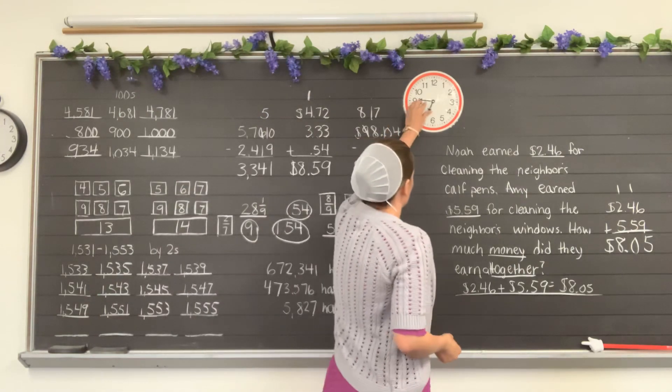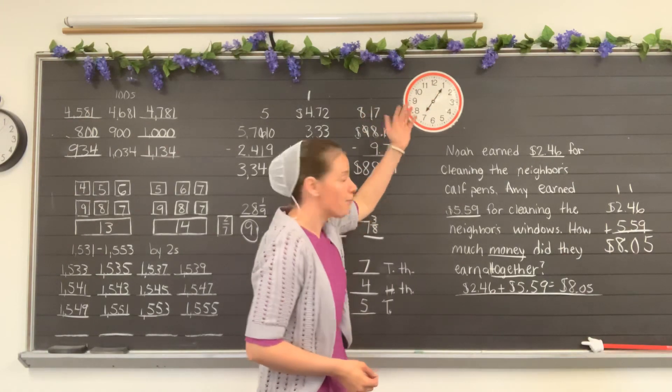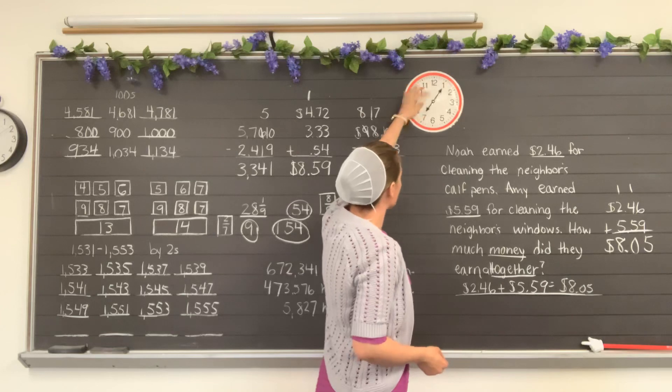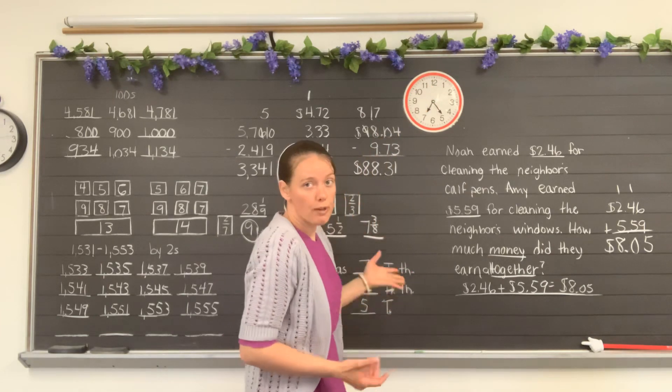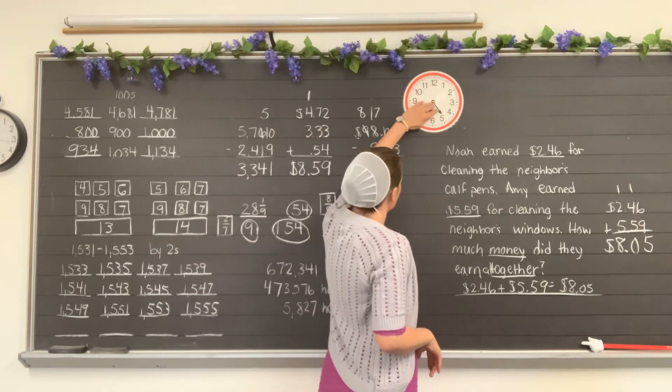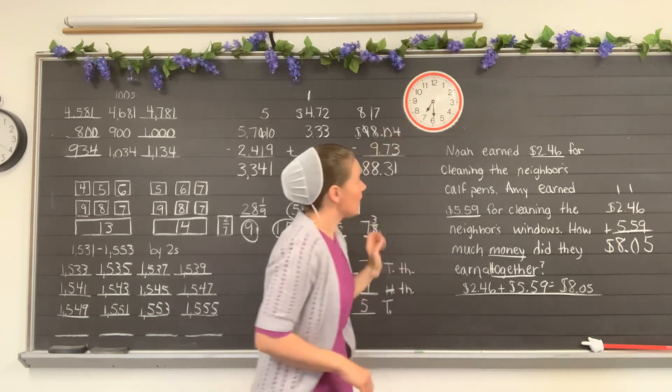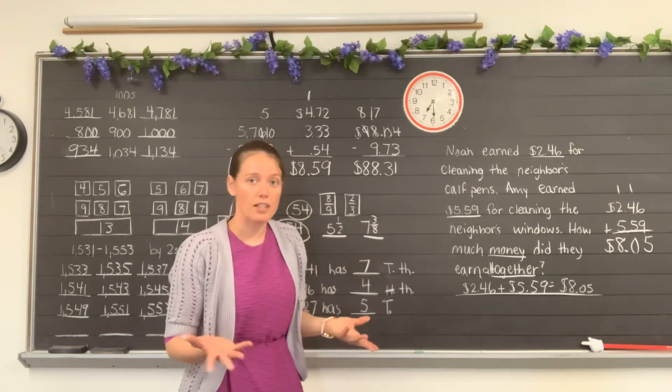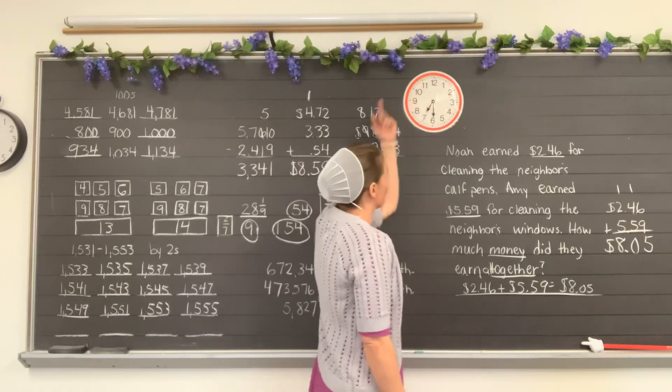Here we have 7:05, 5 minutes past 7 o'clock. Here it's 7:25, 25 minutes past 7 o'clock. And here we have 7:30, or half past 7. It's halfway past 7 o'clock. And yeah, I like that.